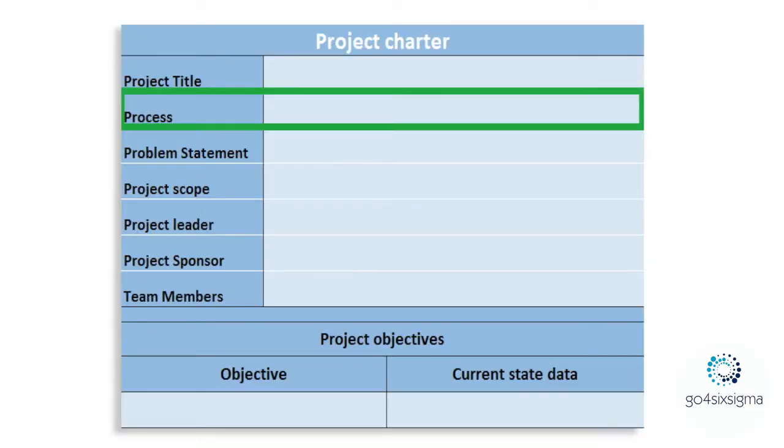The next field is process — what is your process? Please be very precise here. What is your process frequency? How many people are involved? What are the locations where the process is done — is it one country or many countries? Include all that information in the Project Charter, in the process section, and keep it short and simple. It's very important that your project charter is precise so that somebody with no idea about your project can quickly understand what it is about.